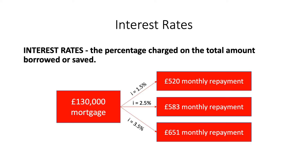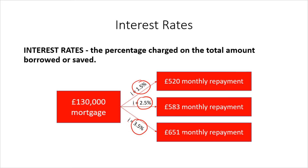In this example, that equates to five pounds. That may not seem like much, but in the context of mortgages or larger loans, even small changes in interest rates can mean a lot. Take this example from the Bank of England: imagine you have a £130,000 mortgage that you want to pay off over 25 years. If the interest rate on your mortgage is 2.5%, you'll end up paying £583 a month. However, if the interest rate goes down by one percent, your monthly repayments go down to £520.